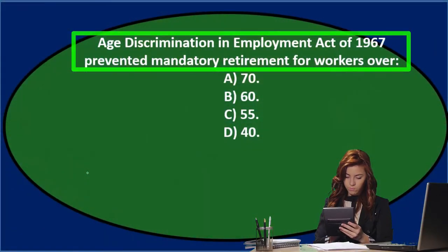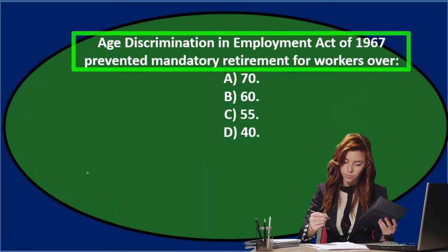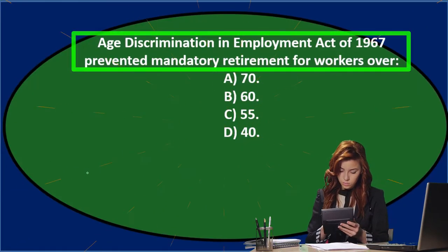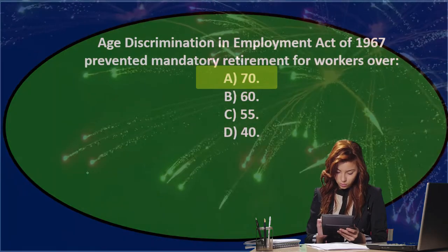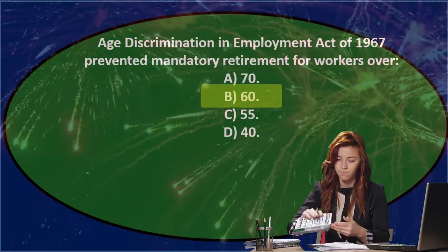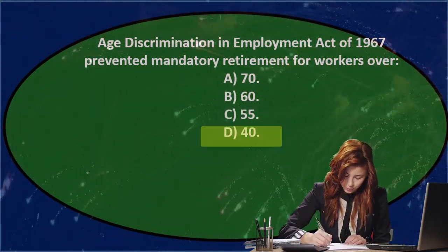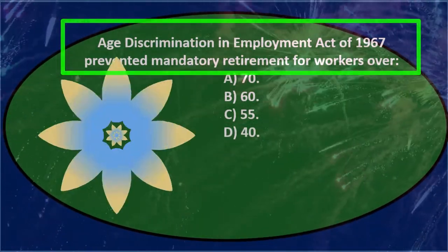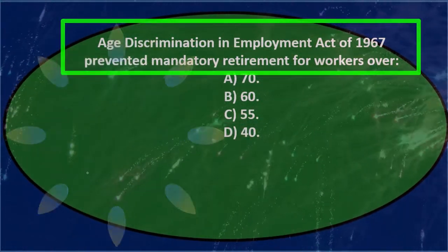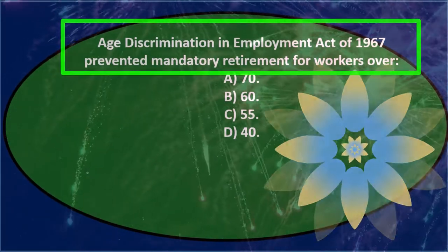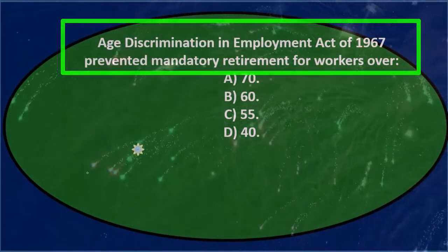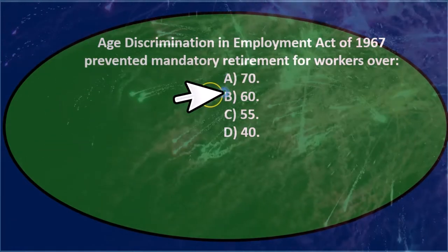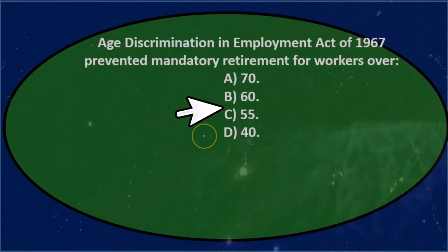Next question: The Age Discrimination in Employment Act of 1967 prevented mandatory retirement for workers over A. 70, B. 60, C. 55, or D. 40. We'll go through this again. The Age Discrimination in Employment Act of 1967 prevented mandatory retirement for workers over either A. 70, B. 60, C. 55, or D. 40.